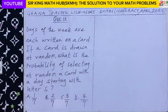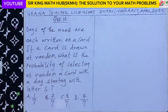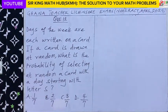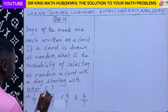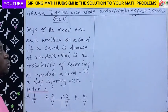Days of the week are each written on a card. If a card is drawn at random, what is the probability of selecting a card with a day starting with the letter S? A day starting with the letter S.